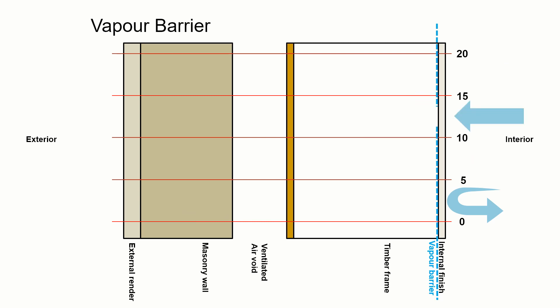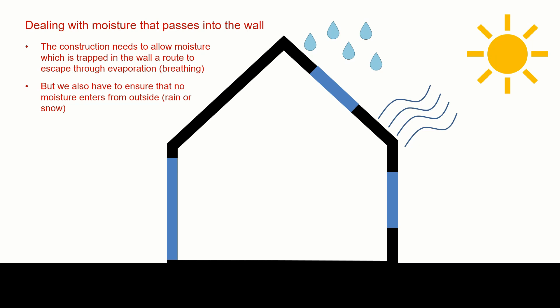But in reality we have imperfections. There are gaps around things like sockets and light switches. There's always a possibility that when the vapour barrier is going to be installed that it's not been taped up correctly and that there are little gaps. So we're going to get moisture and air that's going to pass through into the construction, and there's nothing that we can do to stop that. It's always going to be a problem. So we have to figure out a way to deal with moisture that passes into the wall.